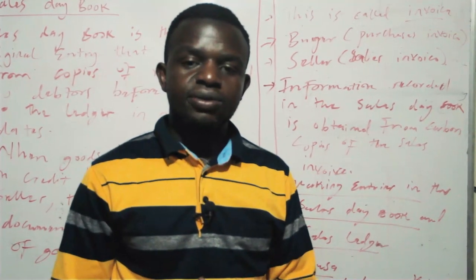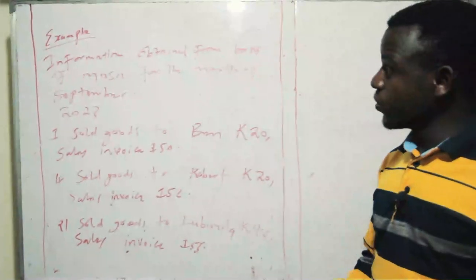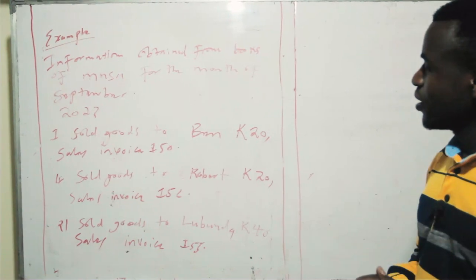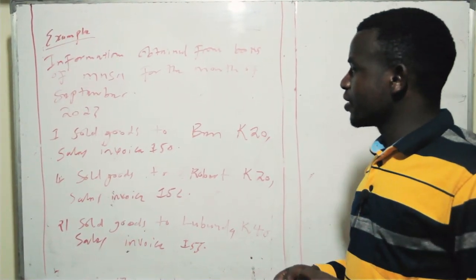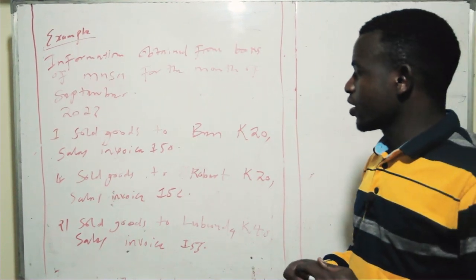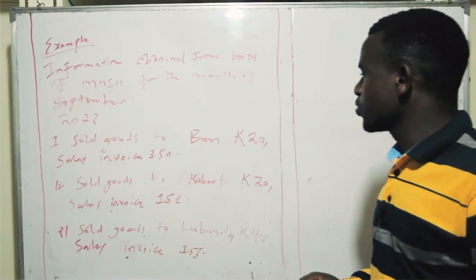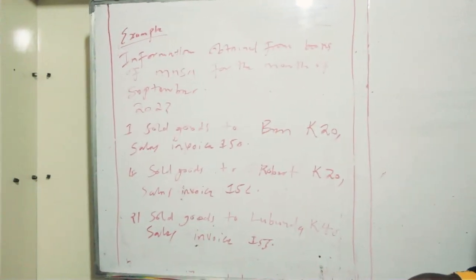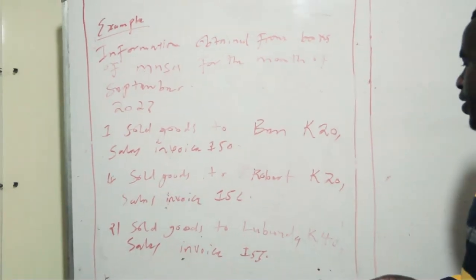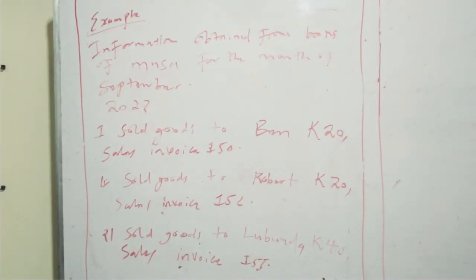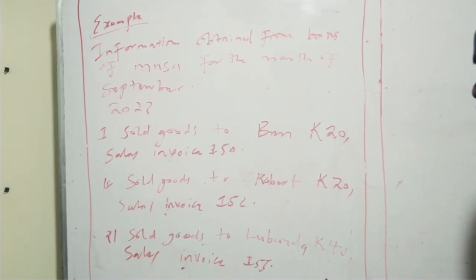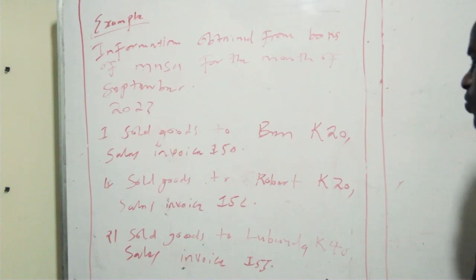Let us now look at an example. This information was obtained from the books of Musa for the month of September 2023. On the 1st of September, sold goods to Ben amounting to 20 kwacha, sales invoice 150. On the 4th, sold goods to Robert amounting to 20 kwacha, sales invoice 152. On the 21st, sold goods to Lubunda amounting to 40 kwacha, sales invoice 155.